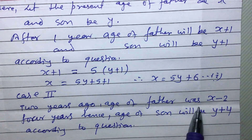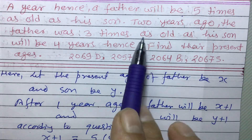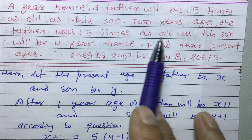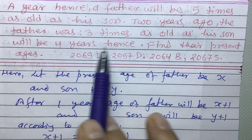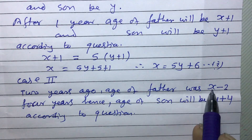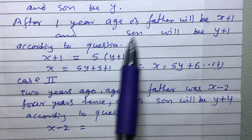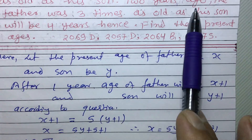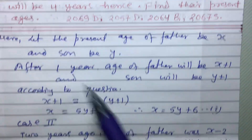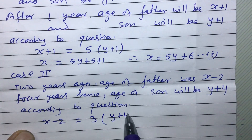According to the equation: two years ago the father was three times as old as his son will be four years hence. So the relation is: x − 2 = 3(y + 4). This is equation two.